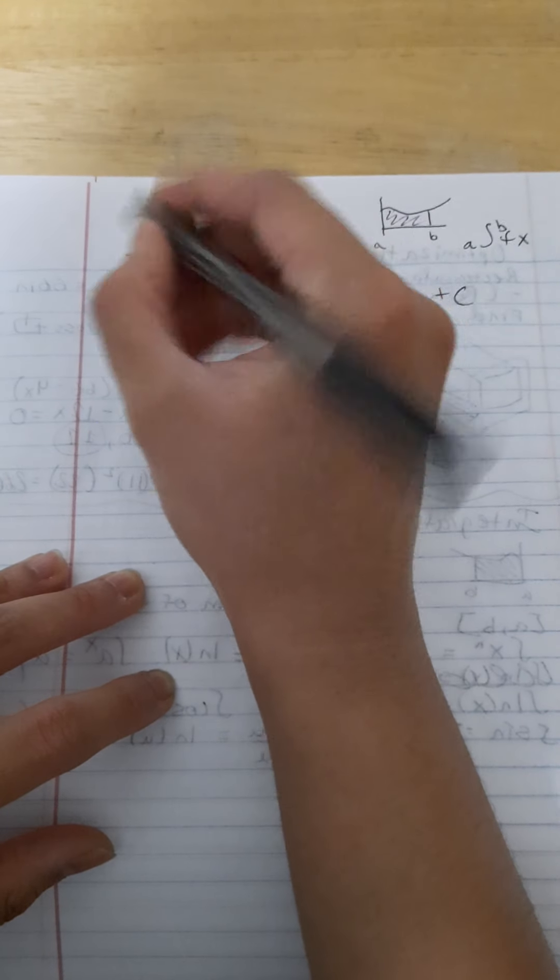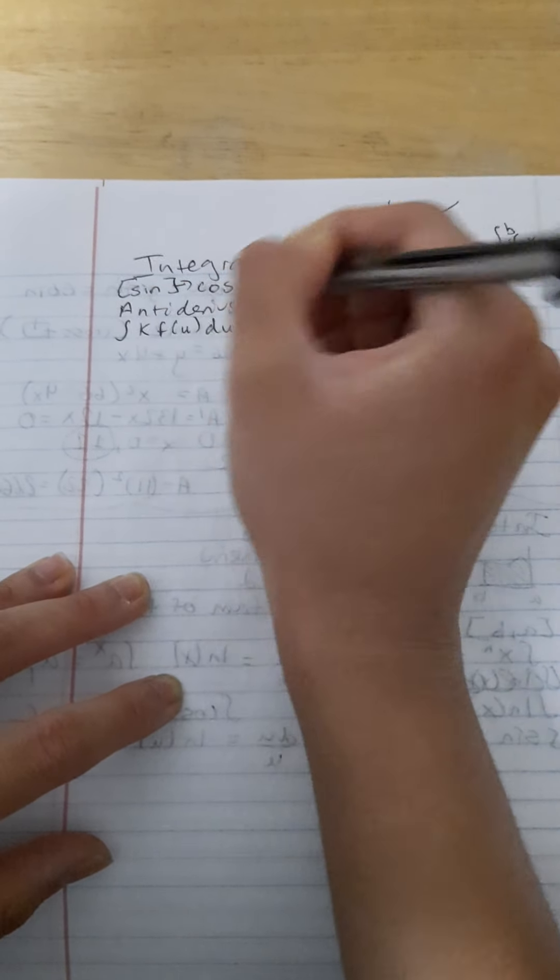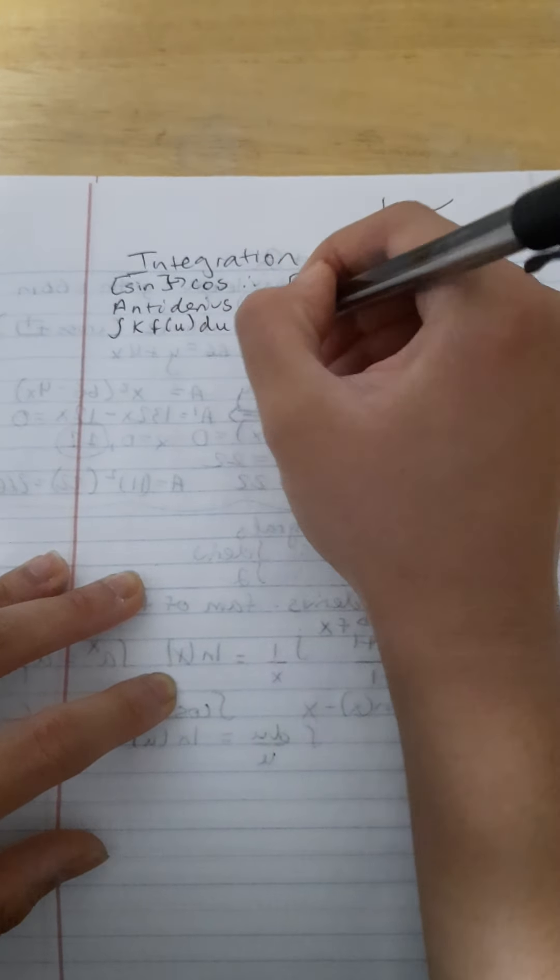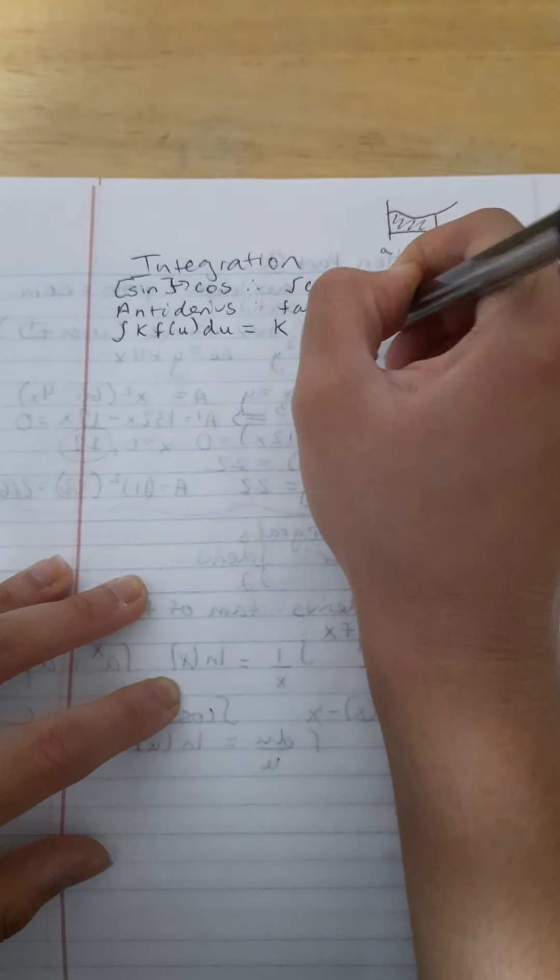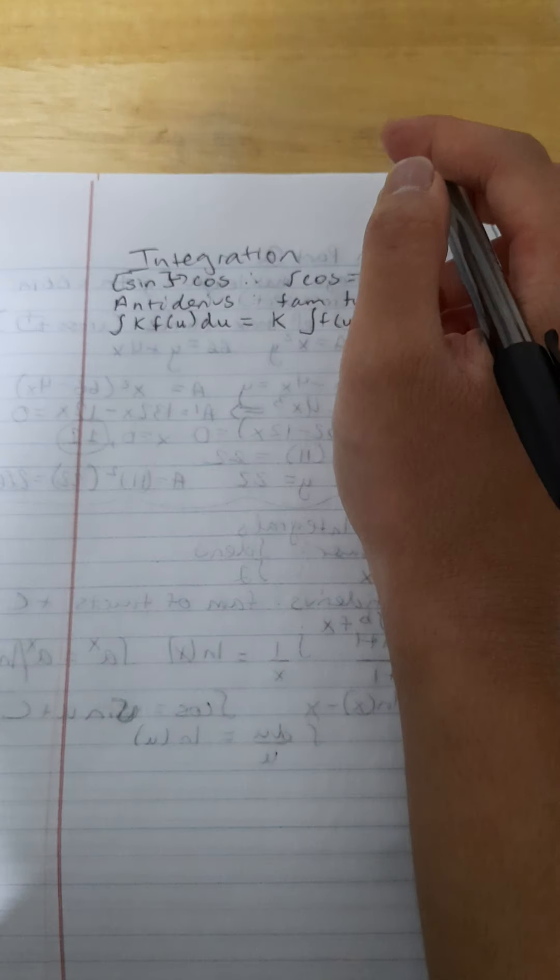All right, let's just go and jump into some integration rules. The constant one, where we have k times the integral of f(u) du, is equal to k moves outside, and we just have a function. Okay, so now let's try some other things.